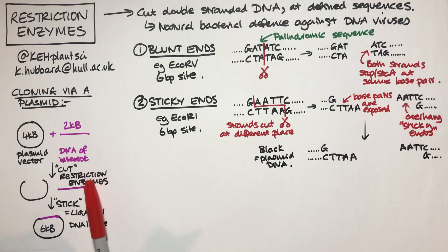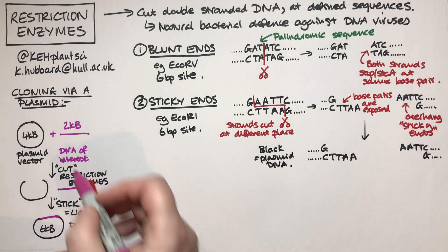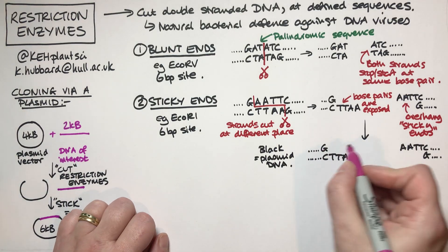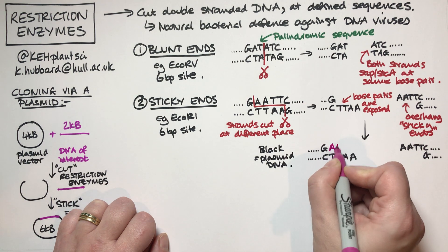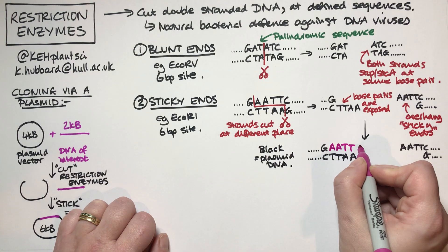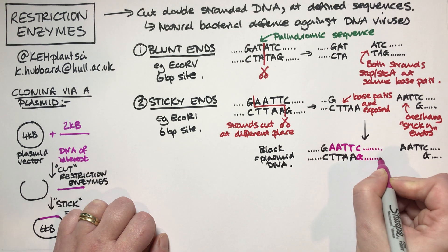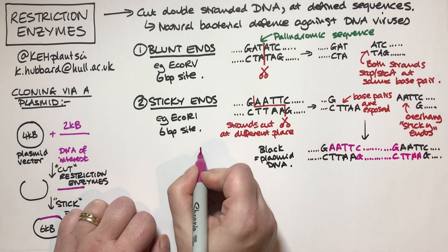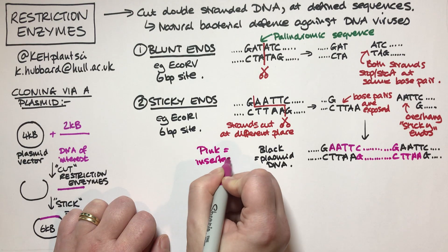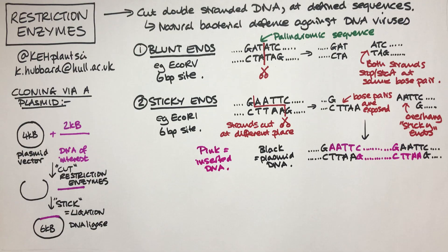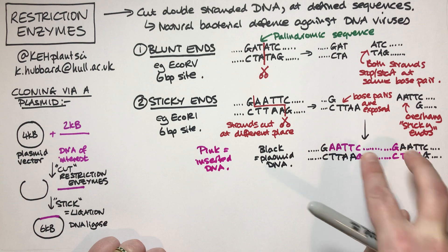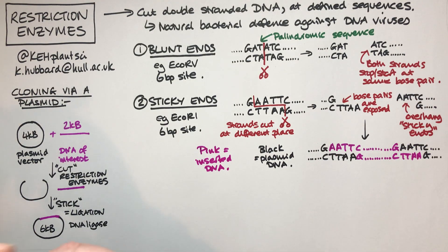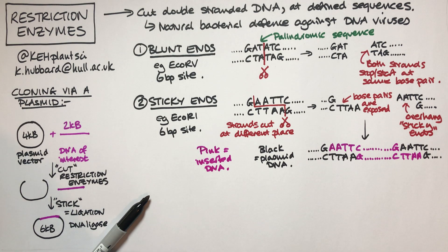If we cut the plasmid with EcoRI, and then we cut the DNA of interest with the same enzyme — EcoRI — they have the same overhangs and they all now stick together. The DNA of interest in pink has AATTC on one end and CTTAA on the other, with the sequence of the 2kb insert in the middle. Now we've got the two things stuck together in a very controlled way — only ends that have been cut with EcoRI will be able to stick back together.